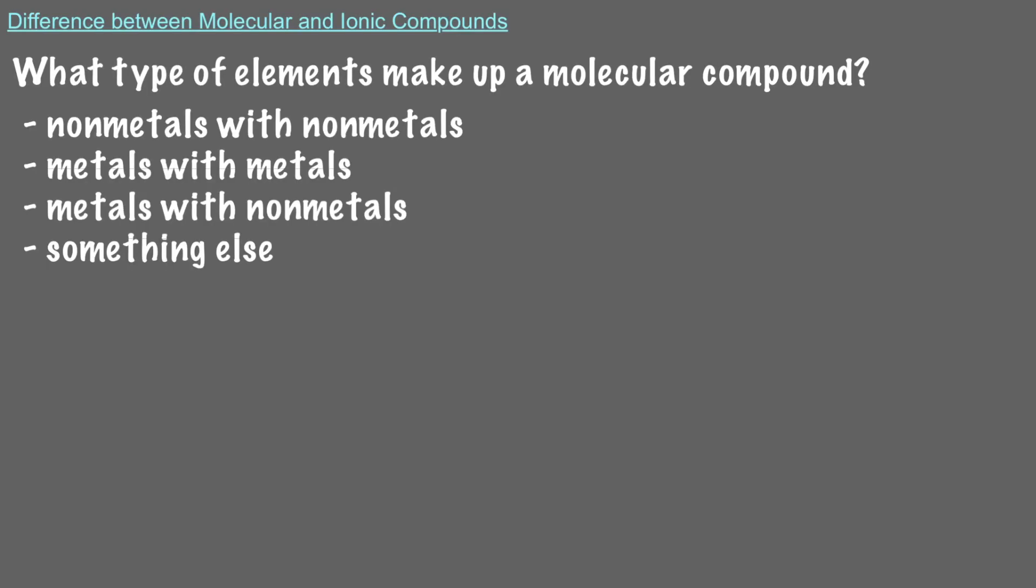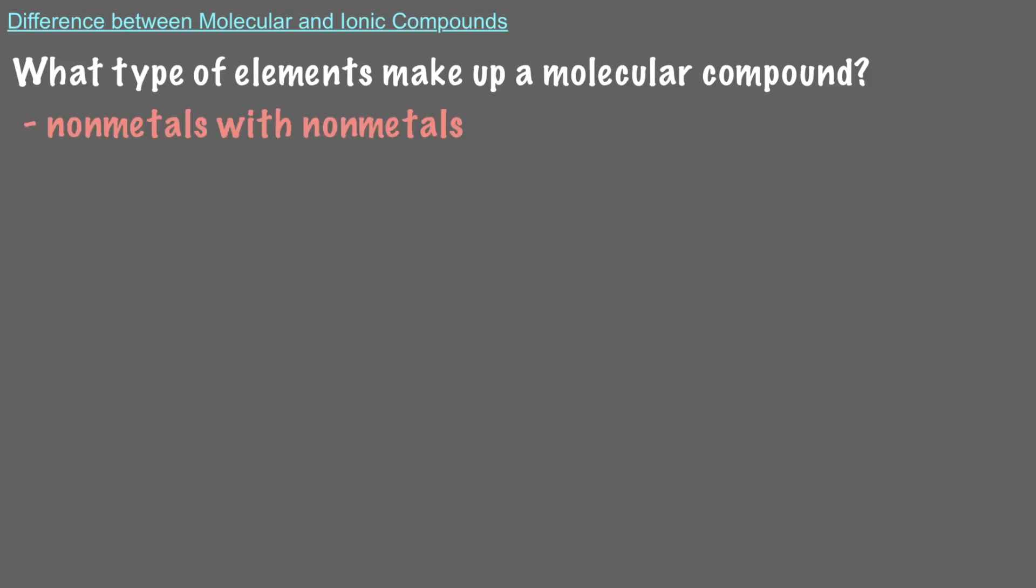Molecular compounds, on the other hand, have a different composition. What type of elements make up a molecular compound? Molecular compounds are comprised only of nonmetal elements. That means they don't have any cations or anions. Instead, these compounds have something else that holds the atoms in the compounds together.